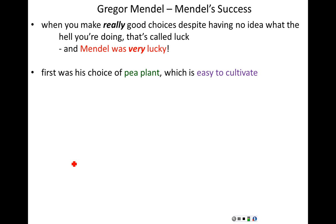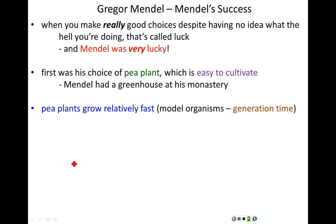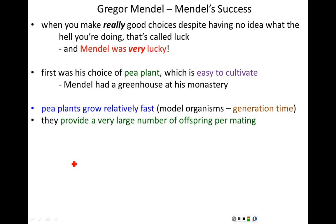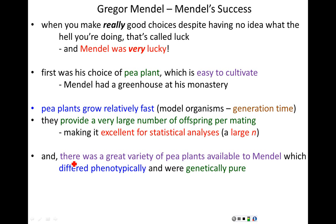His first lucky decision was his choice of pea plants. They're easy to cultivate — Mendel had a greenhouse at his monastery. Pea plants grow relatively fast, which is a key consideration for model organisms: a fast generation time. If you're doing studies of inheritance, you have to look at grandparents, great-grandparents, and great-great-grandparents. With a long generation time, you can't collect all those generations in a single lifetime. Pea plants also provide a very large number of offspring per mating, making them excellent for statistical analyses — that large sample size is always good. And there was a great variety of pea plants available to Mendel which differed in height, seed color, seed shape, pod shape, and other traits.